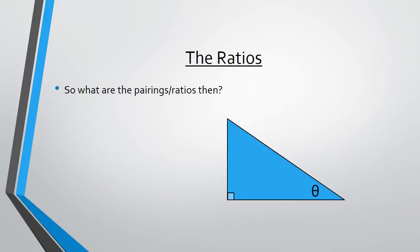The ratios. So what are the pairings or ratios then? In our triangle we can see a given angle there, theta. So we're going to start by labelling it as we did in the previous lesson. Starting with the hypotenuse. Directly in front of theta we'll find the opposite, and between theta and the right angle we'll find adjacent.